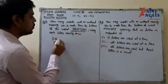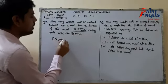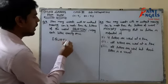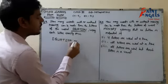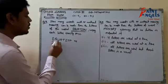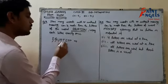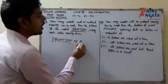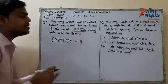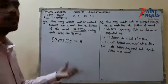So EQUATION has the letters E, Q, U, A, T, I, O, N. Counting them: 1, 2, 3, 4, 5, 6, 7, 8. So we have to arrange these 8 letters.